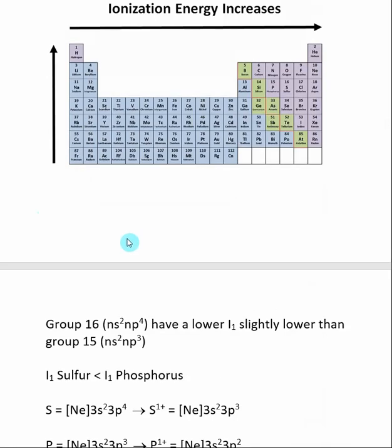Another important exception to the periodic trend for ionization energy involves group 16 elements, which are right here, and group 15 elements. Group 16 elements actually have a slightly lower ionization energy than group 15 elements, which goes against the periodic trend.